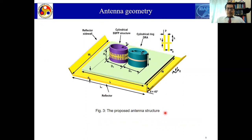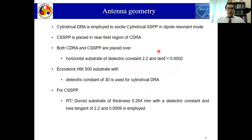This is the structure of our proposed antenna. We have a cylindrical ring DRA which will excite the cylindrical SSVP structure. We have employed reflectors at an angle, and we also have another reflector. This cylindrical SSVP structure is kept in the near field of the cylindrical ring DRA and employs several unit cells. The substrate used has a dielectric constant of 2.2 and loss tangent of 0.0002. The dielectric material for the cylindrical DRA is Eccostock HiK 500 with a dielectric constant of 30. For the cylindrical SSVP structure, we used RT substrate with a thickness of 0.254 mm, dielectric constant 2.2, and loss tangent 0.0009.